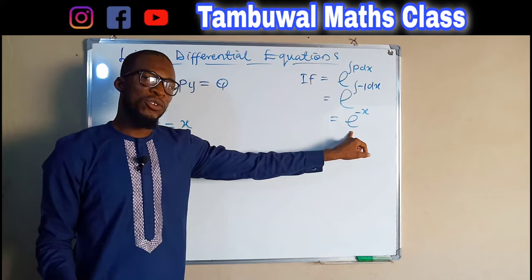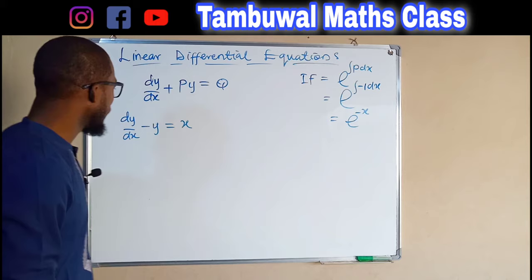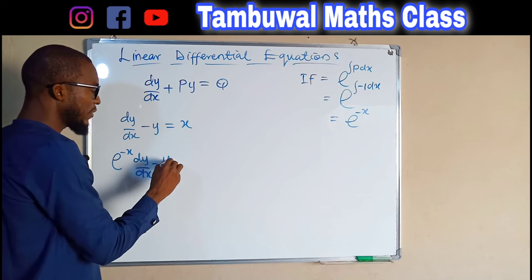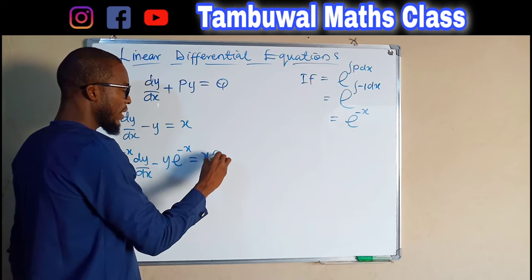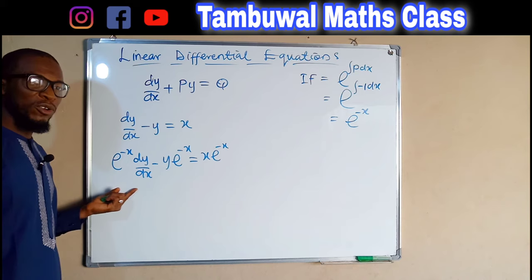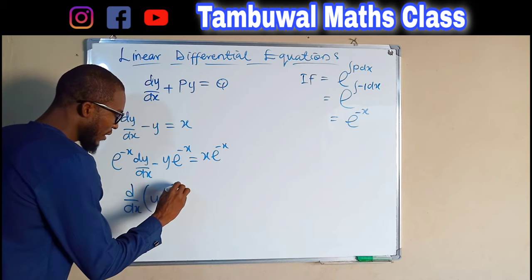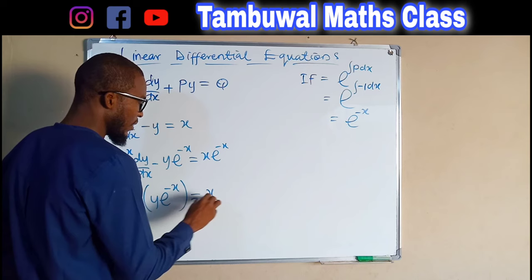We are going to multiply each term by this integrating factor. The first term gives e^(-x) · dy/dx, minus y · e^(-x), and this equals x · e^(-x). The left-hand side can always be expressed as d/dx of y multiplied by the integrating factor e^(-x), and on the right-hand side we have x · e^(-x).